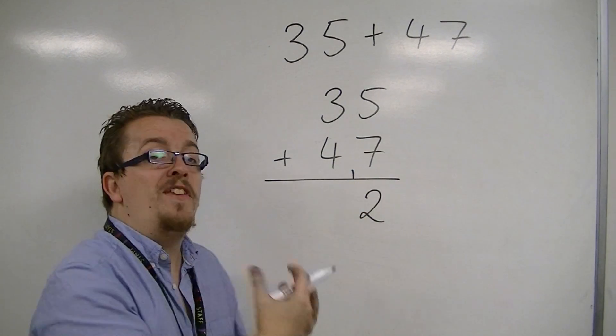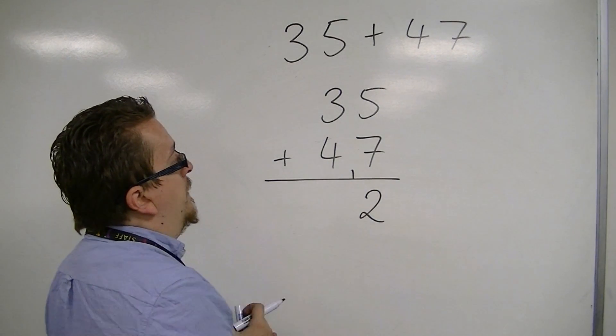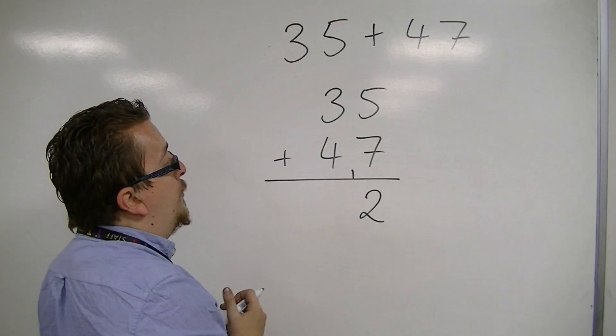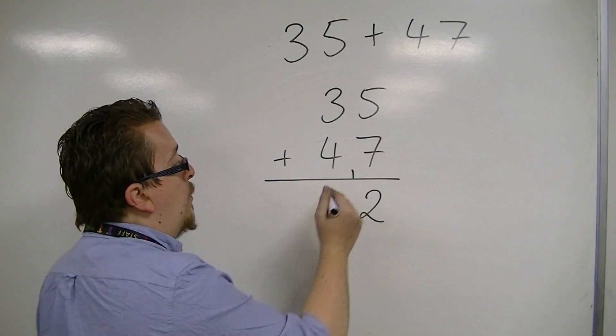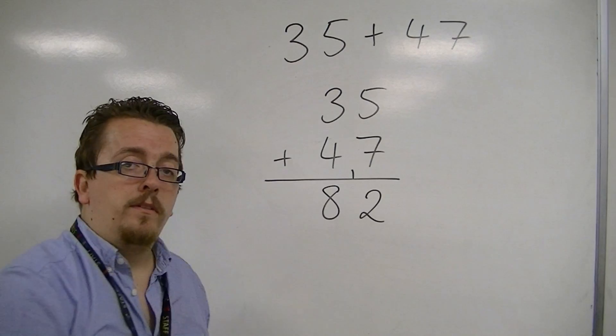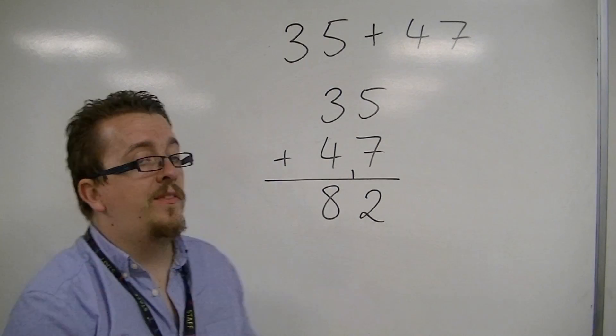So I've just recorded that I've got this extra 10 there. Then I have 3 plus 4 is 7, plus that extra 1 is 8. So 35 plus 47 is 82.